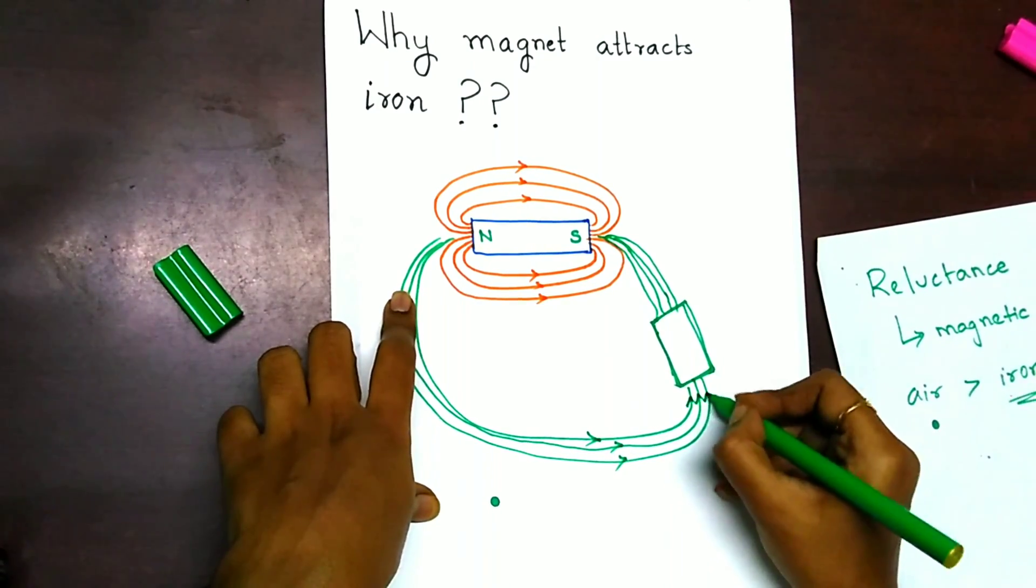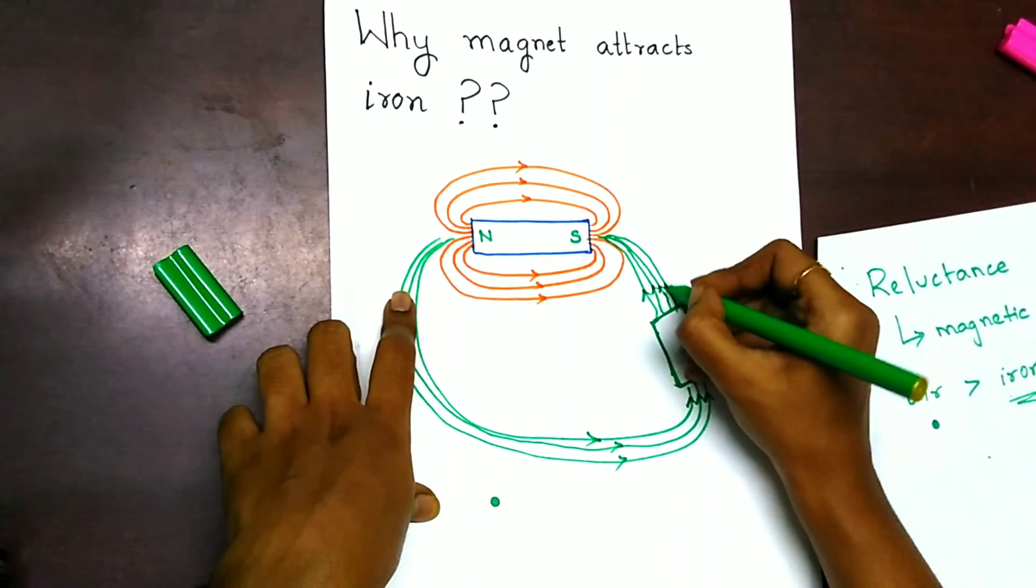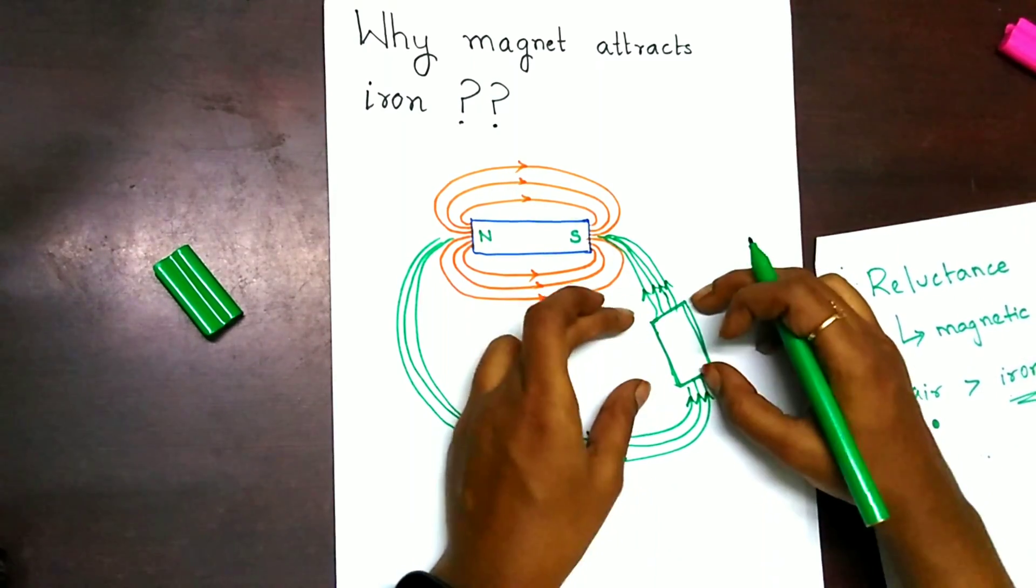You can see that here the magnetic lines of force are entering and here it is leaving. Now, this iron piece itself is a magnet.